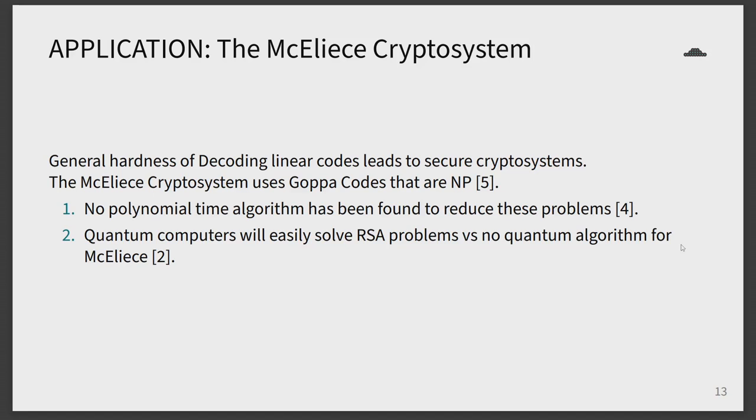This system appears quite secure while also allowing for rapid data rates. The McEliece cryptosystem does not use the usual integer factoring problem or the discrete logarithm problem, which makes it more secure on the fact that the system relies on the hardness of decoding linear codes. No polynomial time algorithm has been found to reduce these problems.